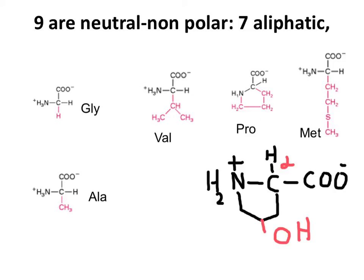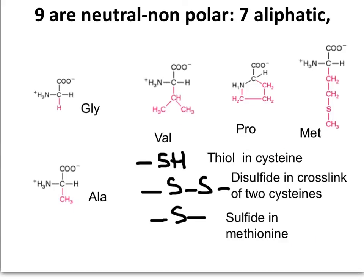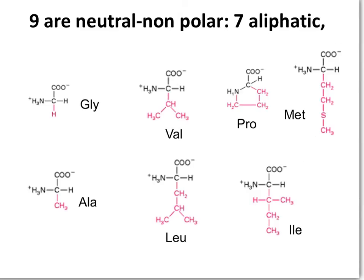From proline we also get hydroxyproline, which is important in the structure of collagen. Methionine is the second amino acid that contains sulfur, but we should not confuse their functions. Cysteine has a free thiol group that can make cross-links between two cysteines, important for the cross-linking of proteins. Methionine contains a sulfide bond — a sulfur that is between two carbons. The last two non-polar amino acids are isomers of one another: leucine and isoleucine. They are isomers because they have the same number of carbons, hydrogens, nitrogen, and oxygen.